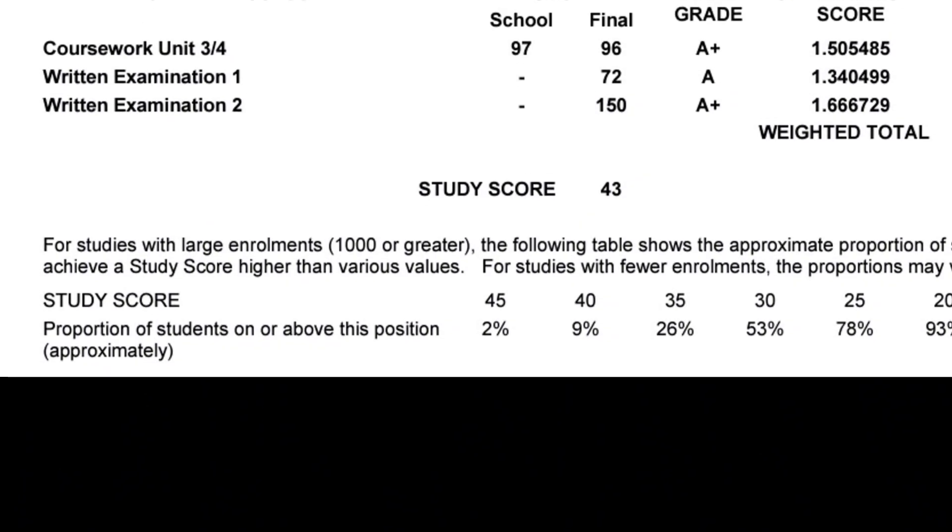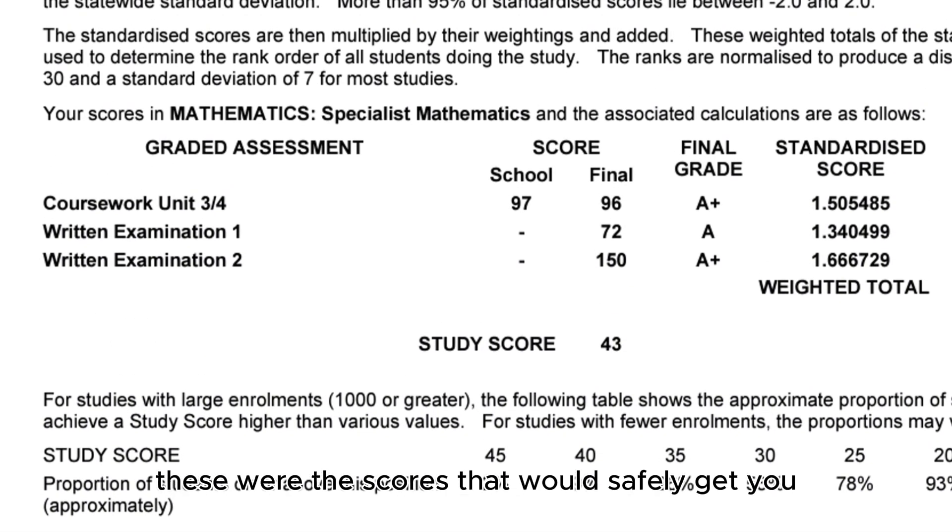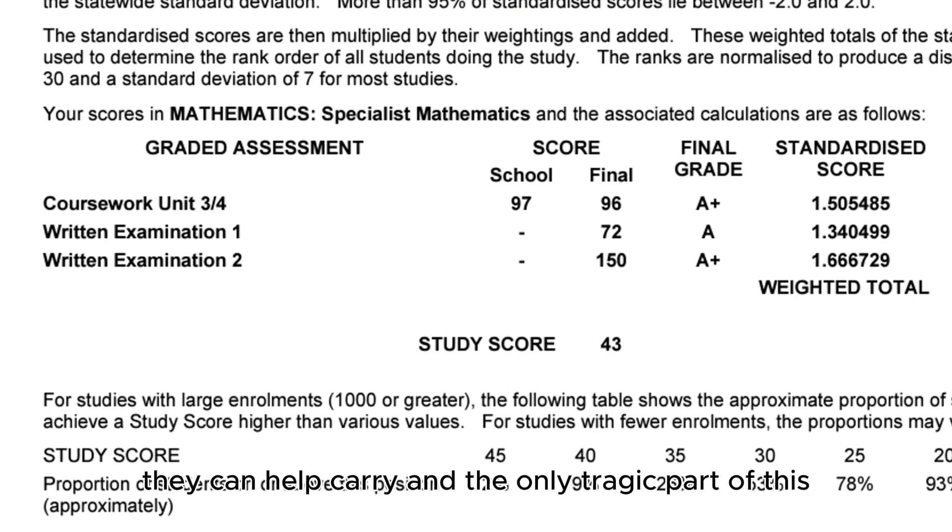Score summary. In 2024, these were the scores that would safely get you above a 40 but not quite a raw 45. As you can see, SACs are pretty important, they can help carry. The only tragic part is that my Exam 1 score was at the very end of the A+ cutoff. 72 was the tipping point between A and A+. This will hopefully give you an idea of what you need to aim for to get your desired score.